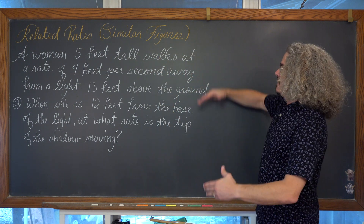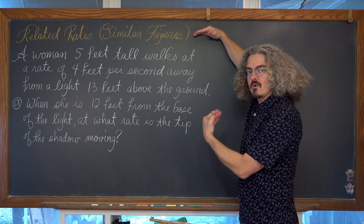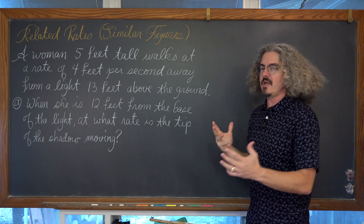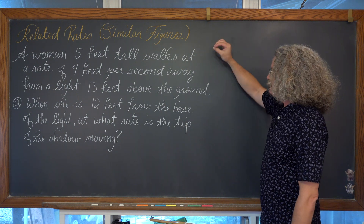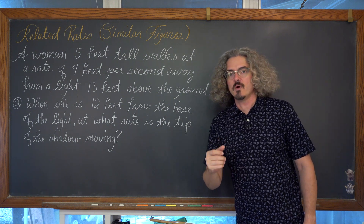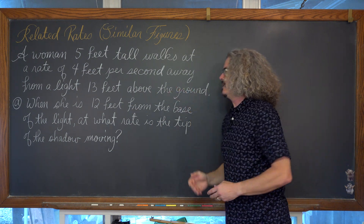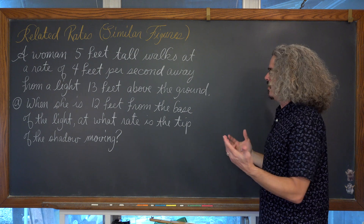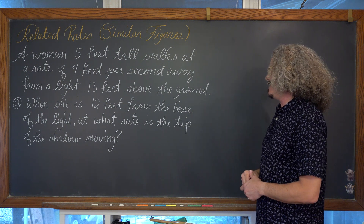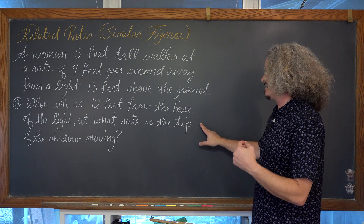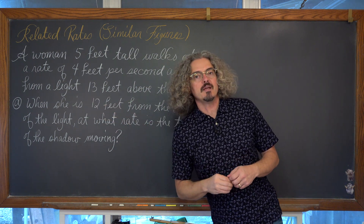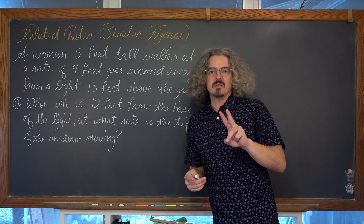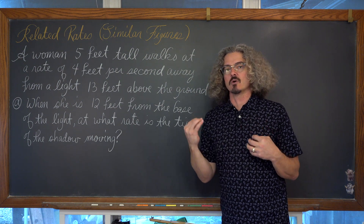In our third video we're going to be looking at similar figures. We have a woman 5 feet tall who walks at a rate of 4 feet per second away from a light which is 13 feet above the ground. When she is 12 feet from the base of the light, at what rate is the tip of her shadow moving away from that light? We're going to do a part B discussing the rate of change for her actual shadow.